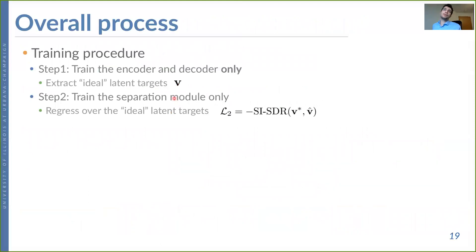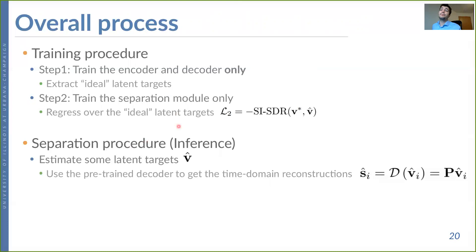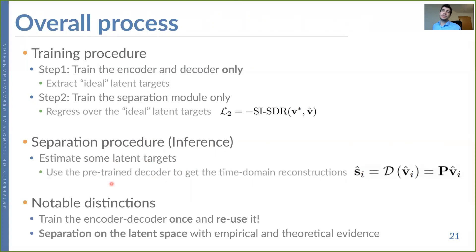To summarize the overall process: during training, we train the encoder and decoder only in the first step, then extract the latent targets or corresponding masks. In the second step, we use these ideal targets with the SI-SDR loss to train only the separation module. During inference, we estimate latent targets and use the pre-trained decoder to reconstruct the time domain signal representation of the sources.